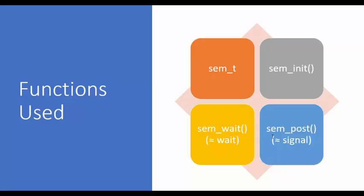The equivalent to signal is `sem_post`. Just remember that in theory the function name is signal, but in the lab the function name that you are going to use is `sem_post`. Students often say `sem_signal` — just remember that the equivalent for signal in the lab is `sem_post`.